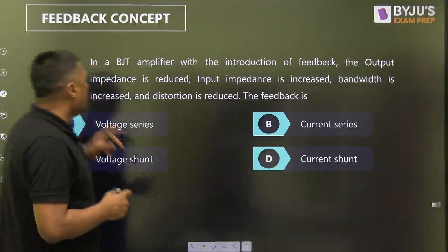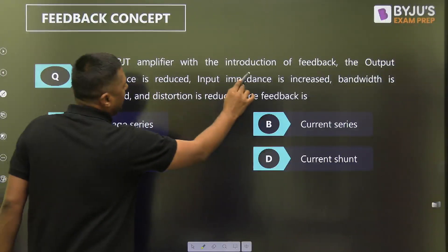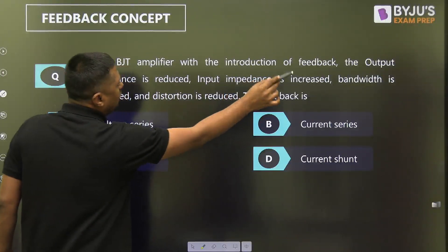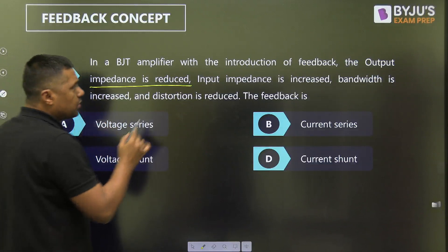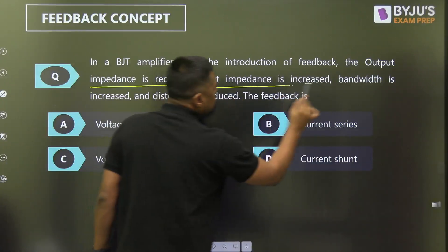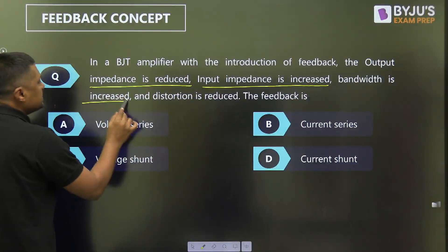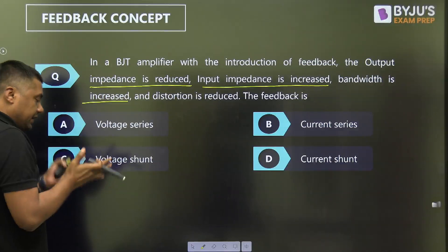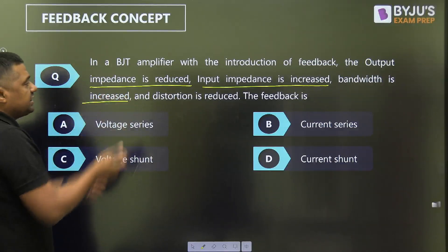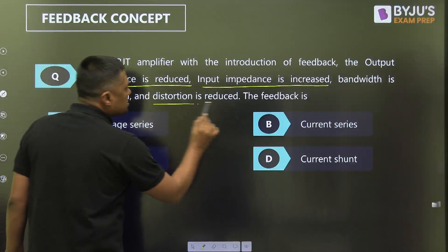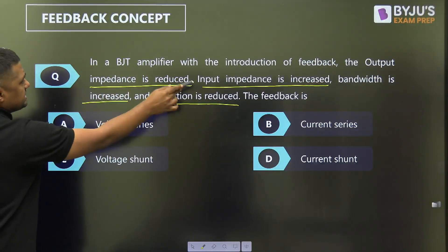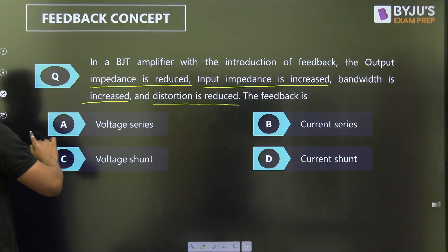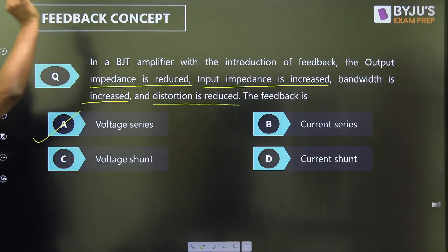Now, time to solve questions. In a VGT amplifier with the introduction of feedback: output impedance is reduced, input impedance is increased, bandwidth increases because of feedback, gain decreases but bandwidth increases so gain-bandwidth product is constant, and distortion is reduced. The feedback type is voltage series feedback — directly identified because input impedance increases and output impedance decreases.